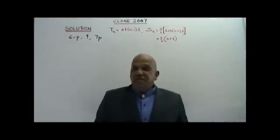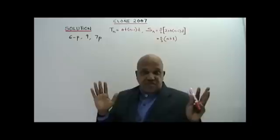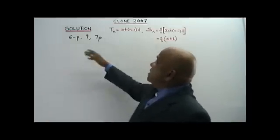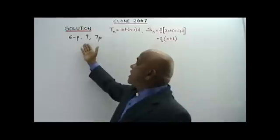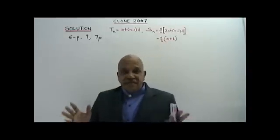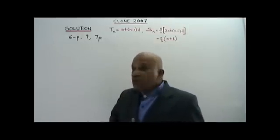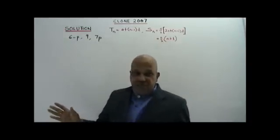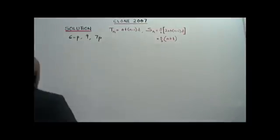Here I have another clone question based on the year 2007 — Arithmetic Progression. We are supposed to find the common difference. These are the first three consecutive terms of an arithmetic progression. Be careful: don't stop at finding the value of P. We are supposed to find the common difference, not just P. But we have to find P first. The technique: right term minus the immediate left term.